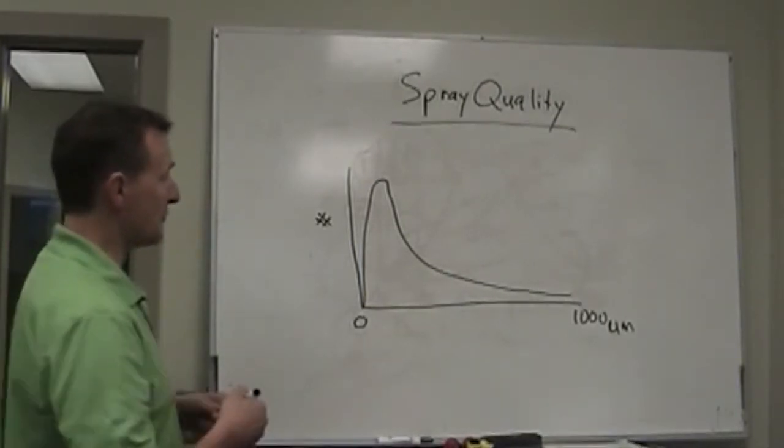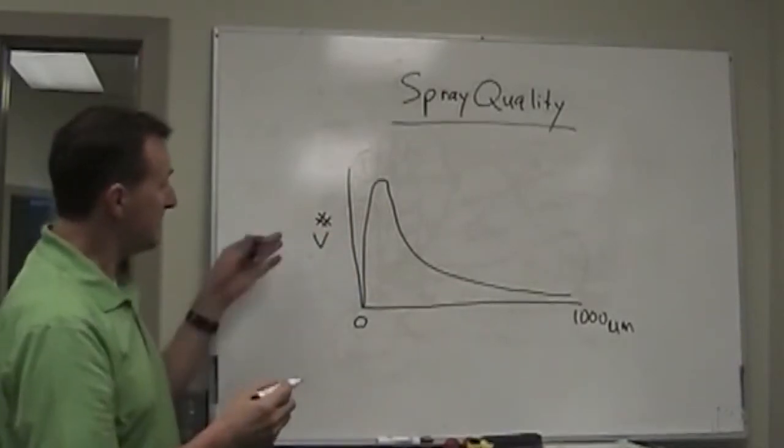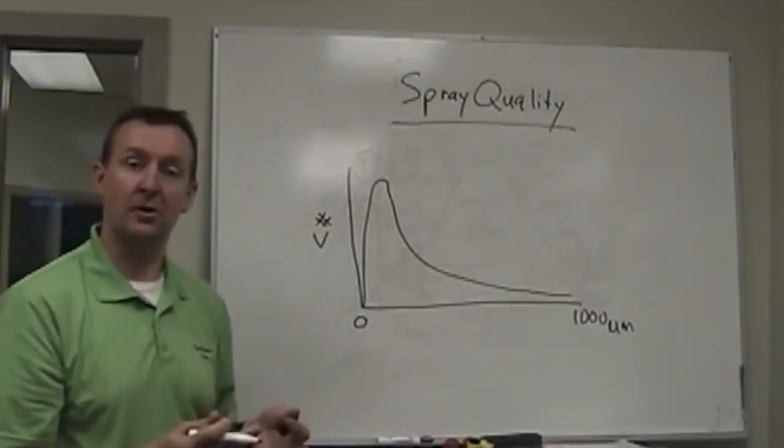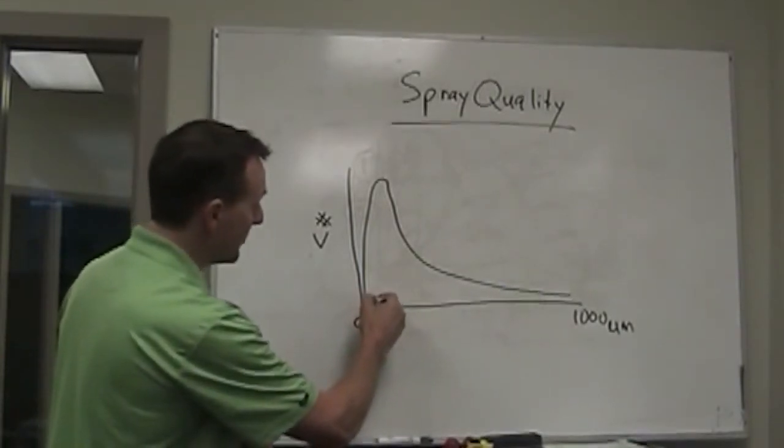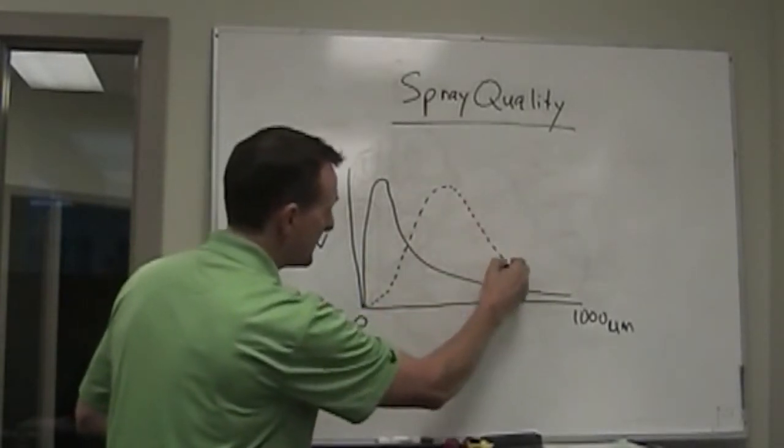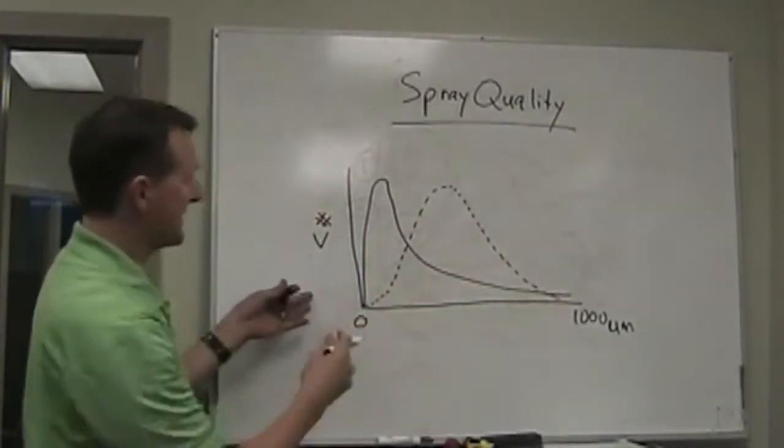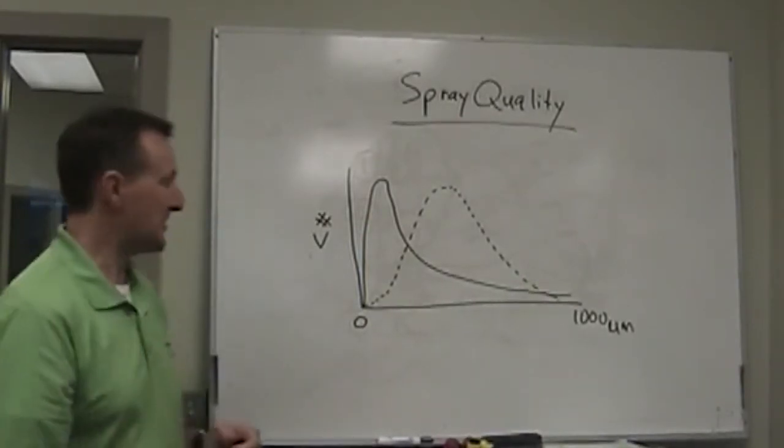The second curve we get is that of volume. So we can take the number distribution and convert it to volume by multiplying it by that formula and we get a curve that looks a little bit more like this. So it's shifted quite a bit to the right. It's almost normal, it's still shifted a little to the left.